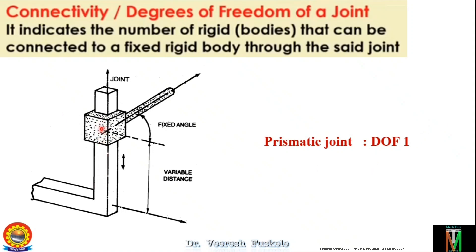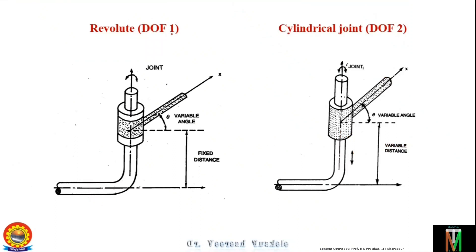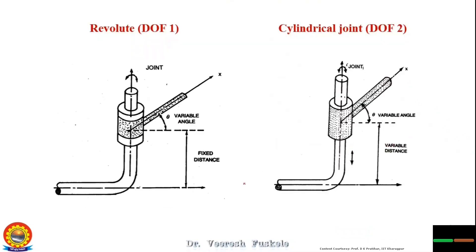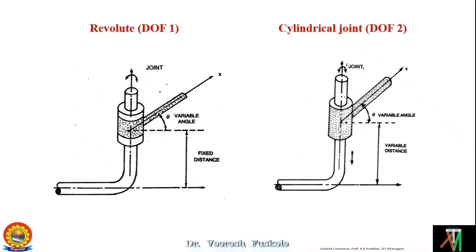The prismatic joint slides up and down only, so it has only one type of motion. Next we have the revolute joint, which is cylindrical in nature. In the previous case the angle was fixed and the distance was variable, but here the distance is fixed and the angle is variable. This output link can change this angle — it can rotate about this vertical axis. So this is the revolute joint.